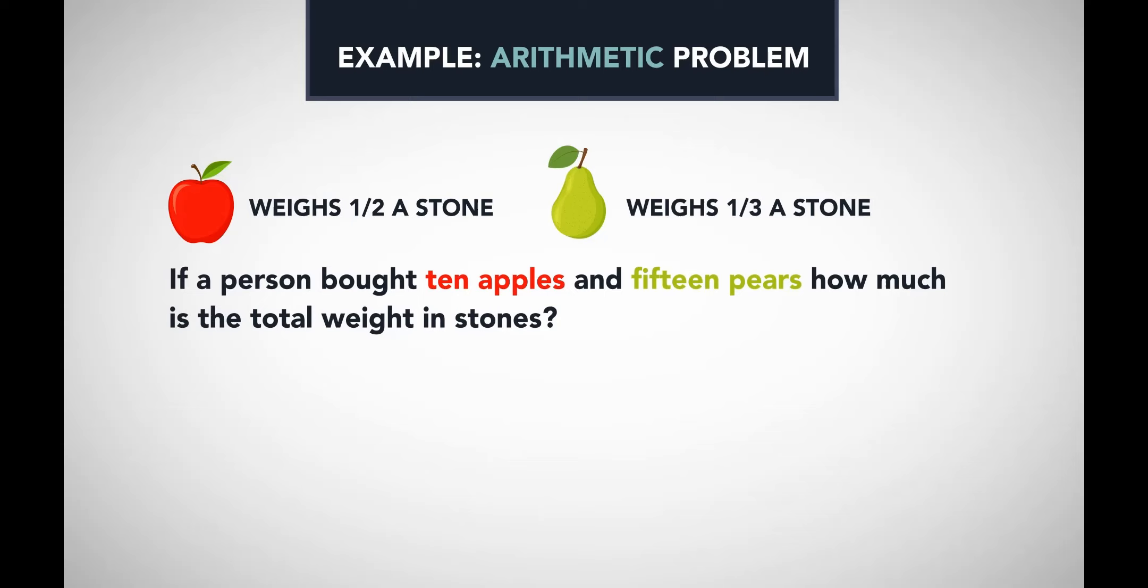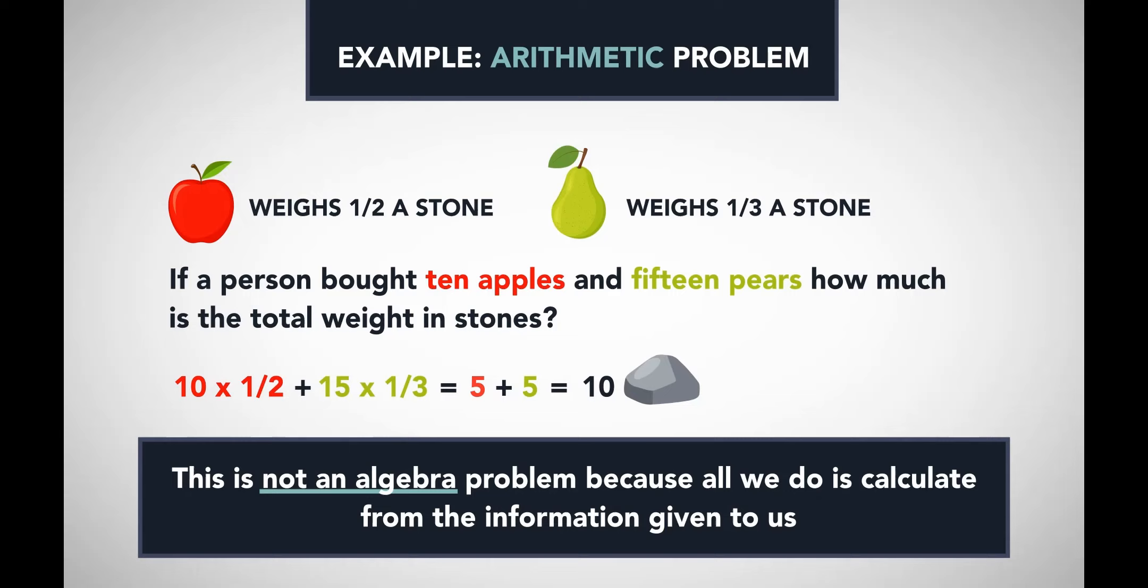This is not a puzzle. We know exactly what we have to do. We know how to add fractions and how to multiply them. So to get the answer, we get ten times a half, that's for the apples, and fifteen times a third, which is for the pears. That gets you five plus five, which is ten stones altogether. This is not an algebra problem because all we have to do is calculate from the information given to us.